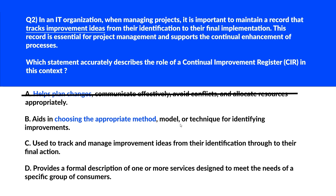Option B aids in choosing the appropriate method, model, or technique for identifying improvements — this focuses on selecting improvement methods but not on tracking and managing improvement ideas, so we'll eliminate it. Option C is used to track and manage improvement ideas from their identification through to their final action. This accurately describes the function of a Continual Improvement Register, also known as CIR.